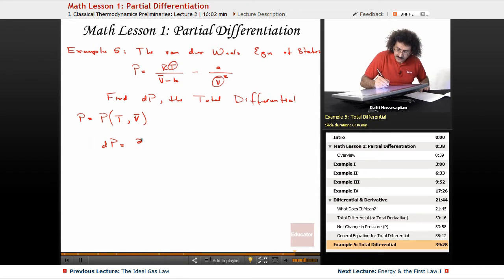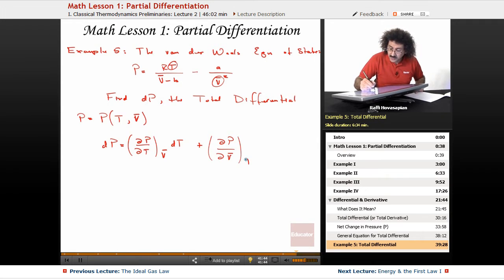dP is equal to ∂P/∂T with respect to the first variable holding the second variable constant times the differential of the first variable, dt, plus the partial of the function with respect to the second variable holding the first variable constant times the differential of the second variable. Okay, now we just need to plug these in.